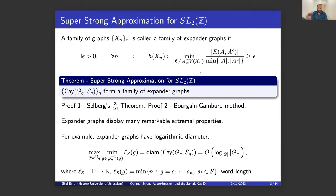Super strong approximation is in fact a theorem. It can be proved in two ways. The first proof uses Selberg's 3/16 theorem, which showed the spectral gap for the Laplacian acting on Riemann surfaces — the upper half plane divided by certain congruence subgroups. The Cayley graphs are closely related to these Riemann surfaces, so Selberg's 3/16 theorem gives a spectral gap for the Cayley graphs, which is equivalent to expansion. The second proof is more elementary and goes under the name of the Bourgain-Gamburd expansion machinery.